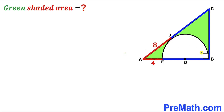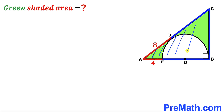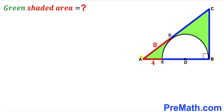Welcome to Pre-Math. In this video we have a semi-circle with center O fully inscribed in a right triangle ABC, as shown in the given diagram, such that point D is the point of tangency. Segment AE has a length of 4 units, whereas segment AD has a length of 8 units.